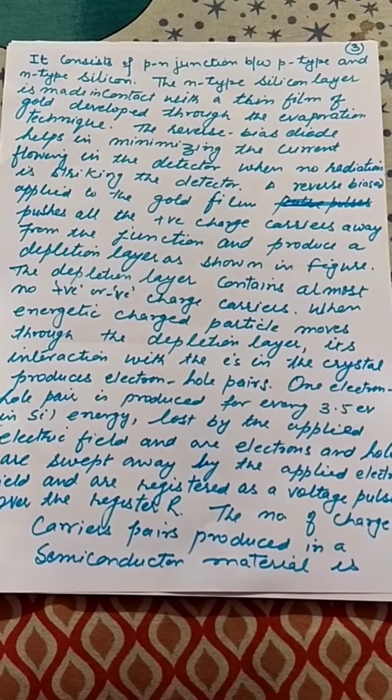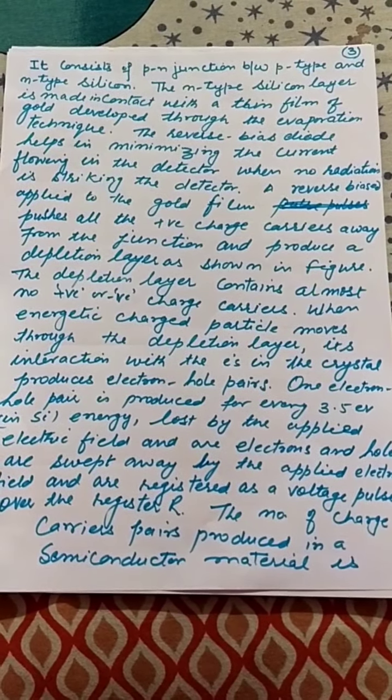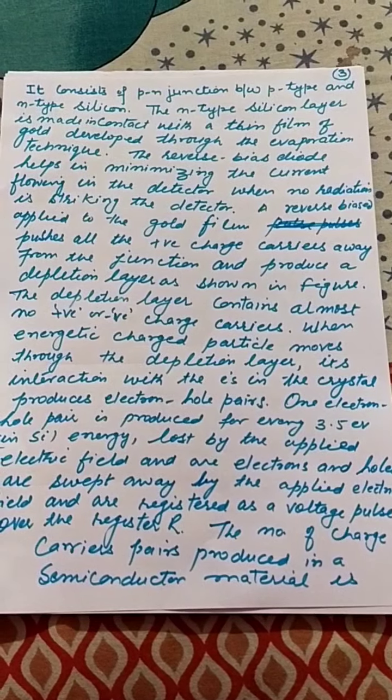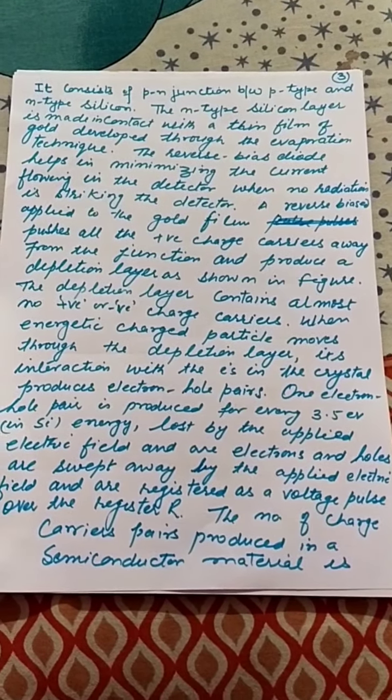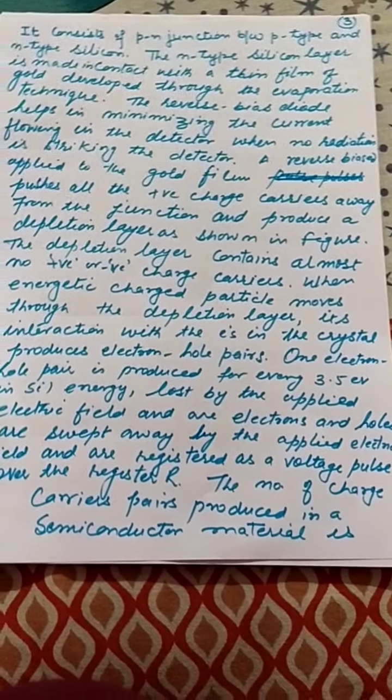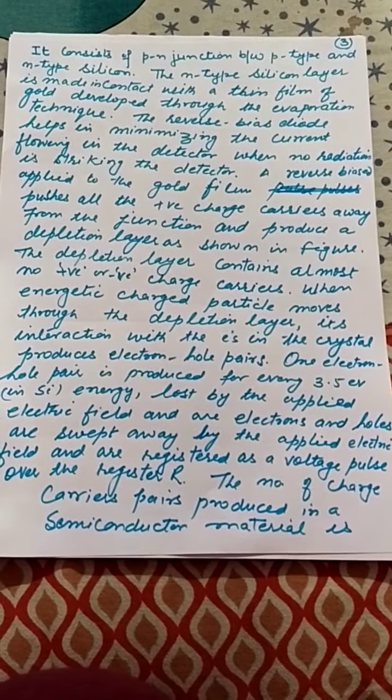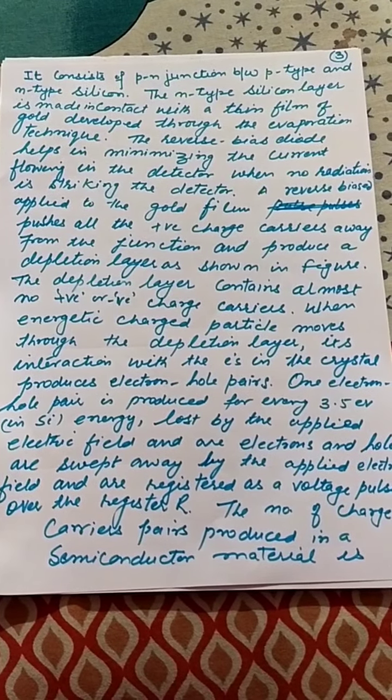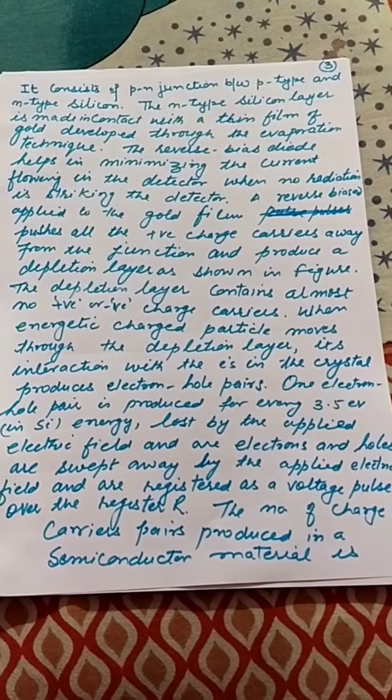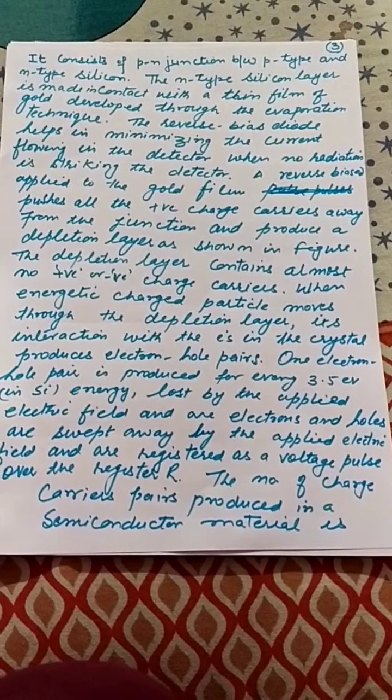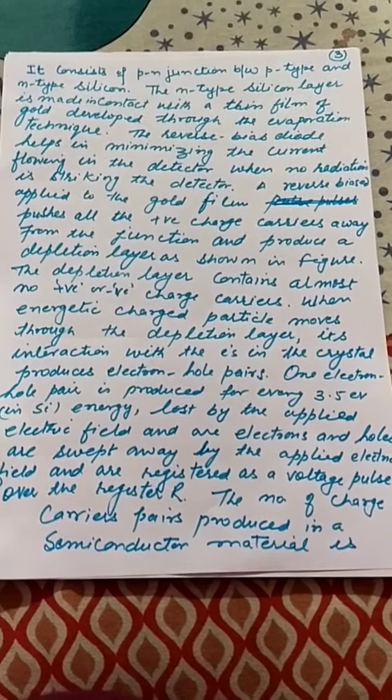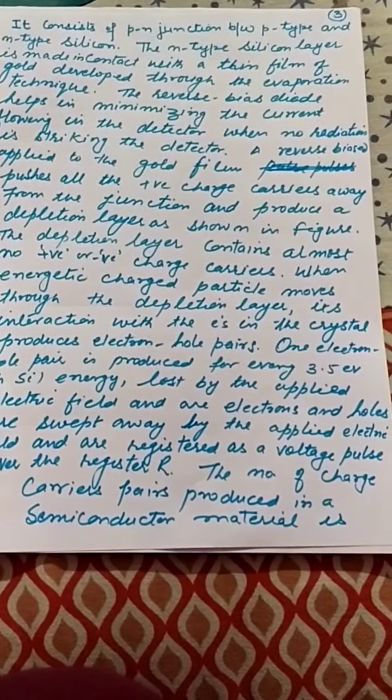Now we have a number of commonly used semiconductor detectors. I'll just write down in black: diffused junction detector, silicon surface barrier detector, ion implantation detector, silicon lithium detector, germanium lithium detector, high purity germanium detector. There are so many detectors in the solid state category, but the basic principles and working we have discussed.